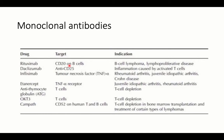Infliximab is an important monoclonal antibody targeting tumor necrosis factor alpha, used as a main treatment for rheumatoid arthritis, juvenile rheumatoid arthritis, and Crohn's disease. An alternative is etanercept, which targets the TNF-alpha receptor and can be used in the same conditions if infliximab fails or causes side effects.